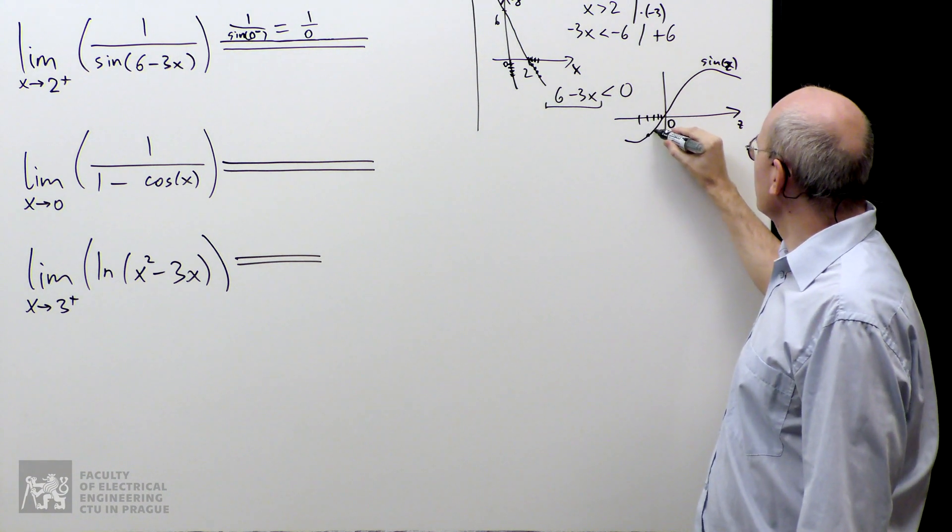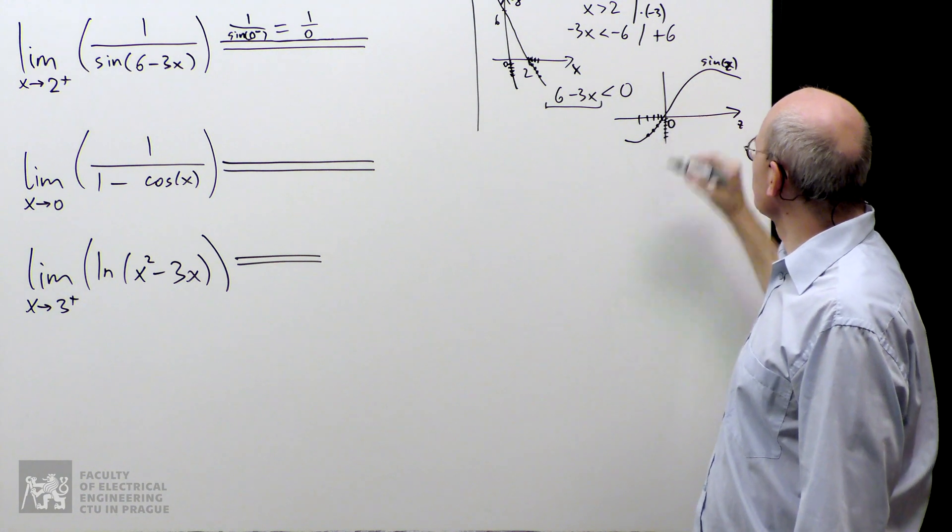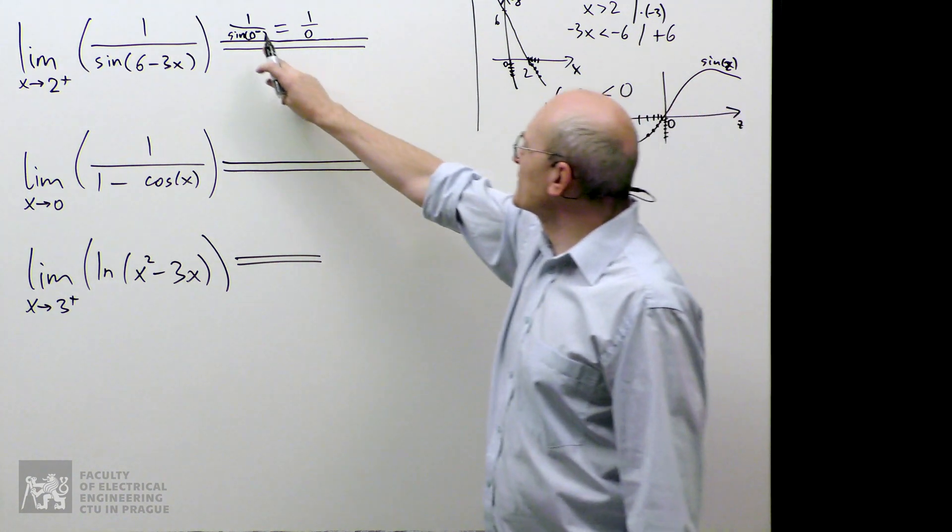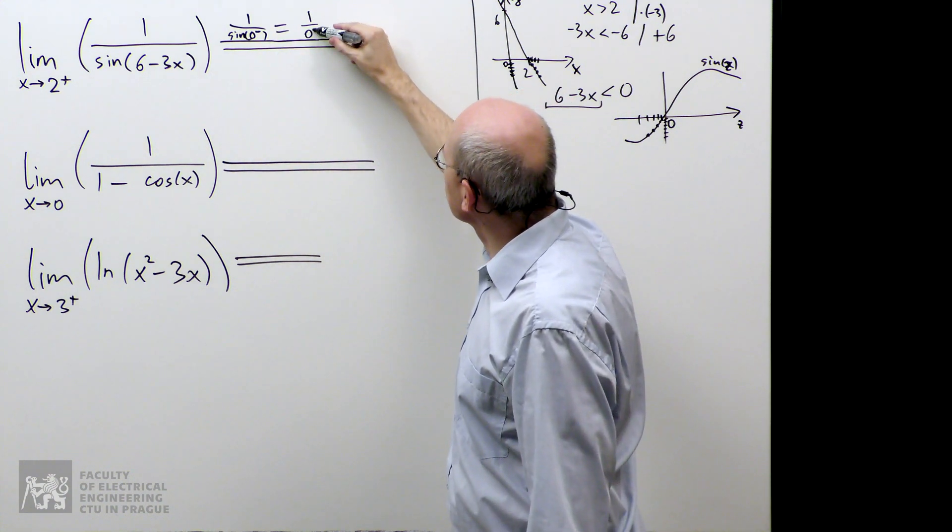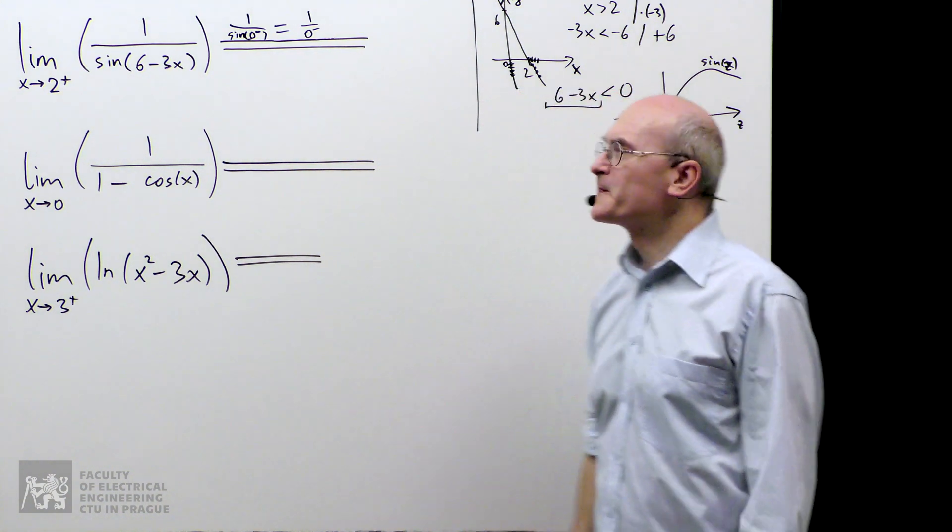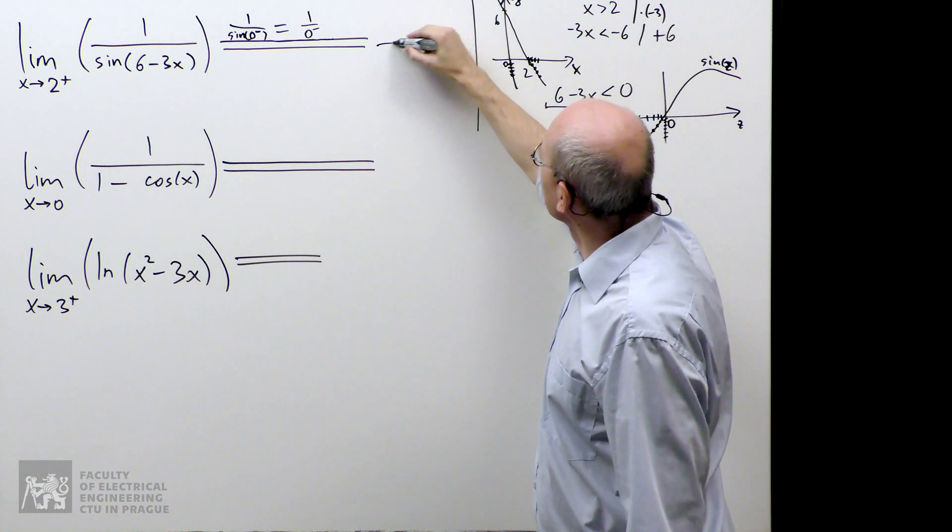And we are looking at the values of the sine function, and we can see that we are approaching 0 from below. So the outcome of the sine of negative is negative 0.